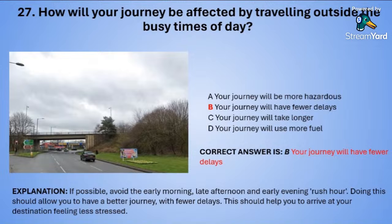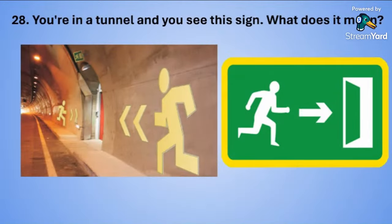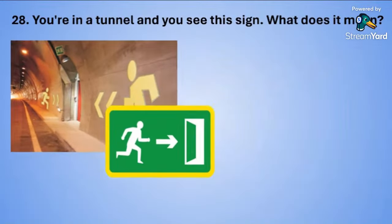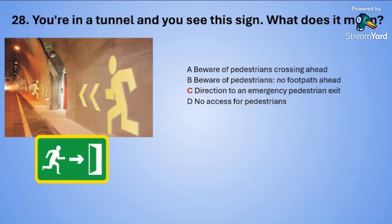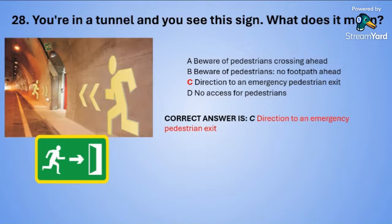Question twenty-eight: You are in a tunnel and you see a green, yellow and white sign. What does the sign mean? A: beware of pedestrians crossing ahead. B: beware of pedestrians, no footpath ahead. C: direction to an emergency pedestrian exit. Or D: no access for pedestrians. The correct answer is C — direction to an emergency pedestrian exit.